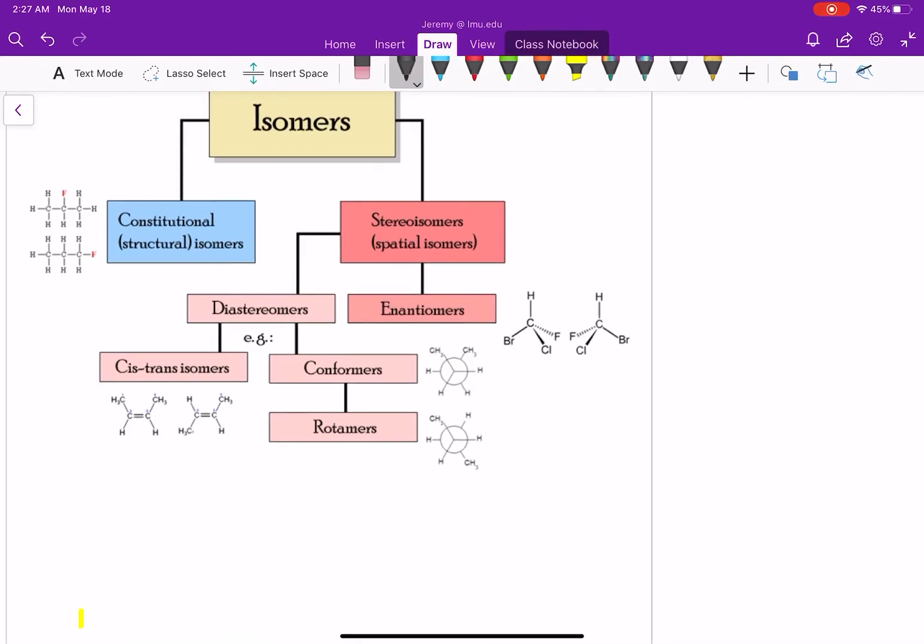So stereoisomers. Stereoisomers are spatial isomers. So these compounds have the same formula and the same connectivity, but they have a different orientation in 3D space.